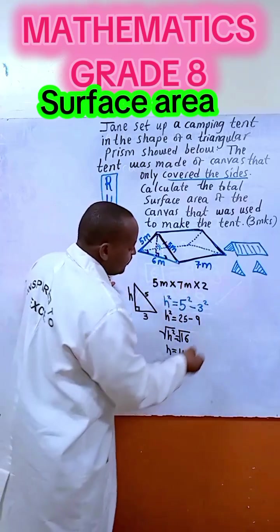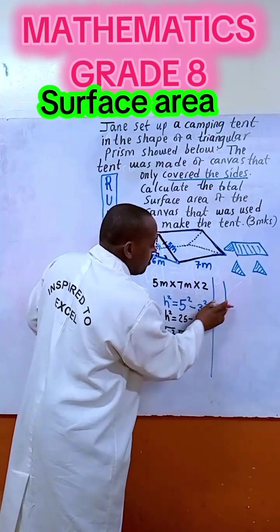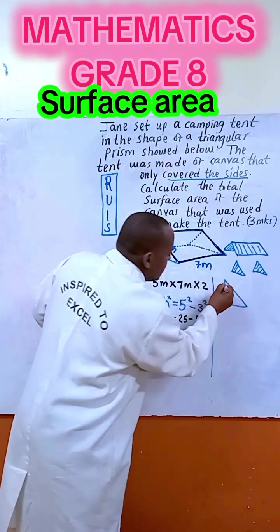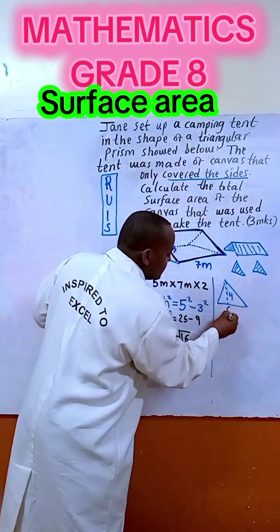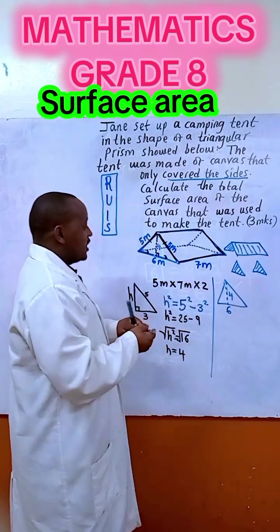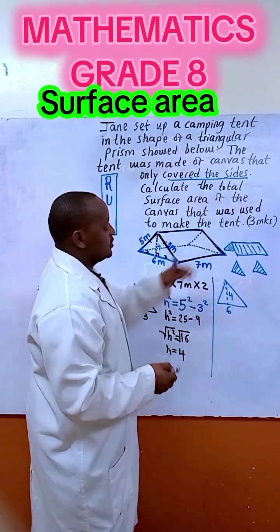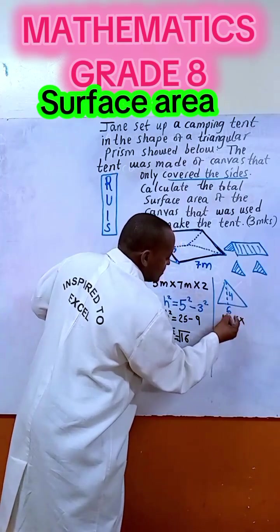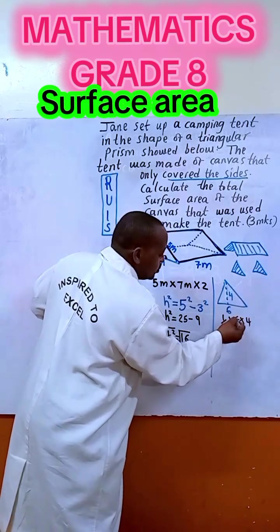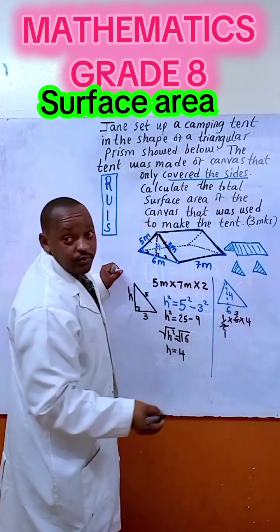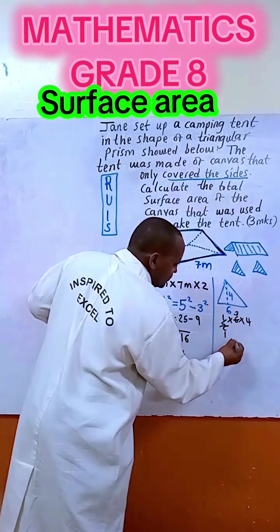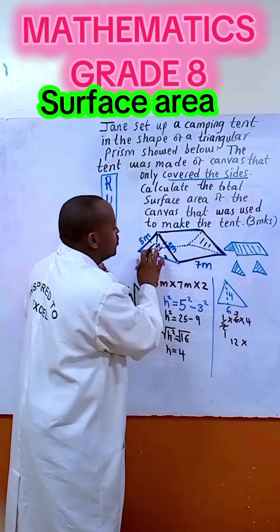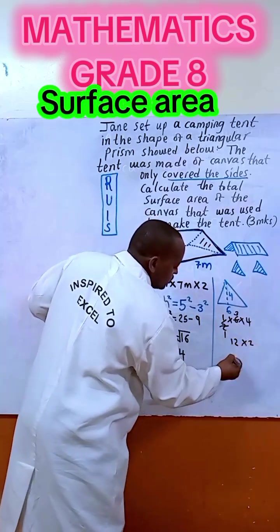Now remember area of a triangle equals to half base times height, and you know the height is 4 and the base is 6. So let us calculate that area, and remember there are two, we have this area and another one here. So this is half times 6 times 4, which is 12. And there are two of them, so 12 times 2 because of this side and this one. 12 times 2 we get 24.